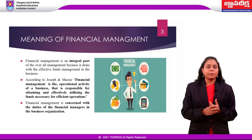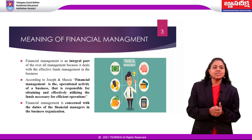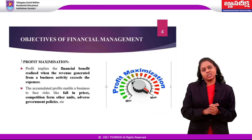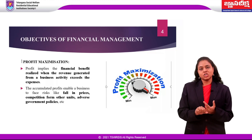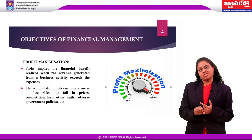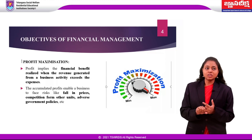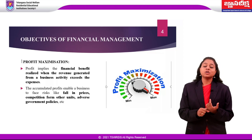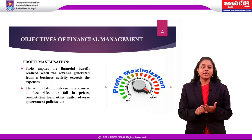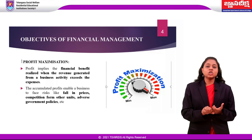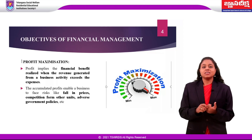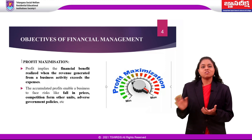Moving on to the objectives of financial management. There are basically two objectives: the first being profit maximization and the second being wealth maximization. Profit is not a new term — it can be called revenue or income. Profit implies the financial benefit realized when the revenue generated from the business activity exceeds the expenses. In short, profit equals income minus expenses.